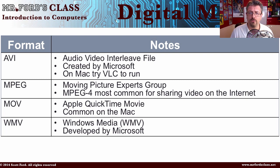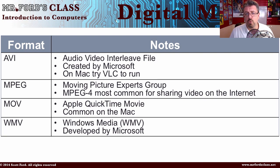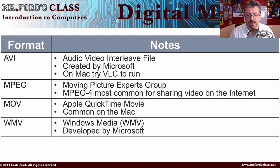Just like with digital imaging and digital audio, we have different file formats for video. Here are four big ones you'll run into. AVI — Audio Video Interleaf — is created by Microsoft; if you're on a Mac you'll need VLC, which is a free program, to run it. MPEG — MPEG 4 is the most commonly used for file sharing on the internet. MOV is the Apple QuickTime movie file, the common format on a Mac, used for Apple movie trailers. And WMV — Windows Media Video — is Microsoft's video compression format.